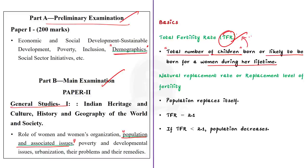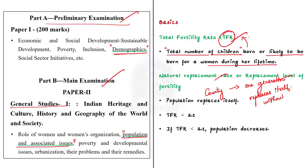Next, we are going to see the natural replacement rate, or the replacement level of fertility. A country is said to have achieved replacement level of fertility when the population exactly replaces itself from one generation to the next without migration. When the Total Fertility Rate reaches roughly 2.1, the population starts replacing itself — that is why a TFR of 2.1 is called the replacement level of fertility.